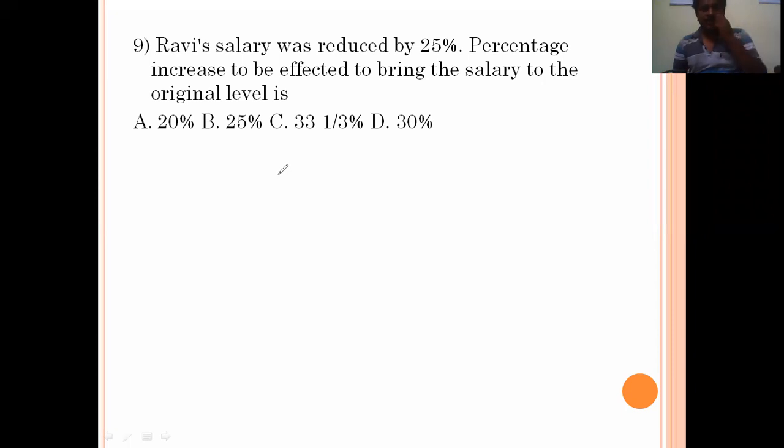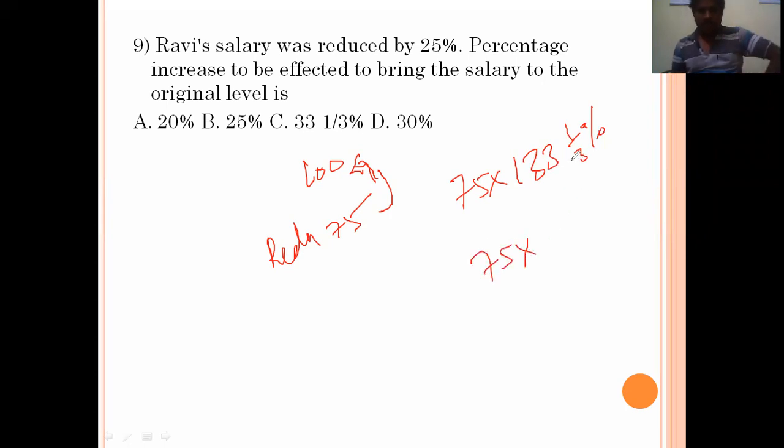The percentage increase to be effected to bring the salary to the original level is? Original salary is 100 rupees. Now reduced amount is 75. How much percentage will increase 75 to get to 100? Here, multiply with highest value first. 75 times 33 and 1/3 percent increase means 133 and 1/3 percent. 75 times 400 by 3 divided by 300 equals 100. So whenever we increase this percentage by 33 and 1/3 percent, we get back to 100. Option C is the right answer.